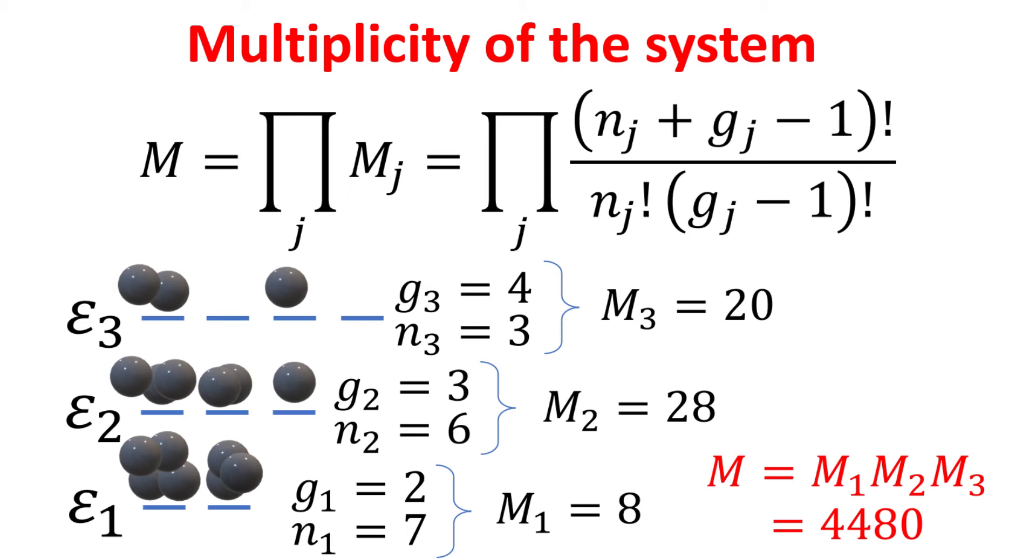In this example, we illustrate a three-energy level system, with n_1 equals to 7, n_2 equals to 6 and n_3 equals to 3 bosons distributed across the three energy levels. With the degeneracies as indicated, we see that this system has a multiplicity of 4480.